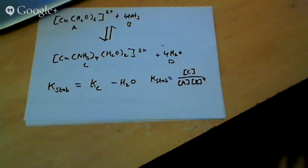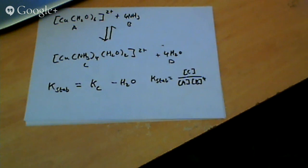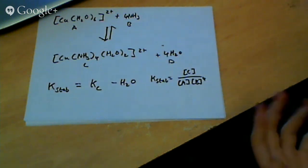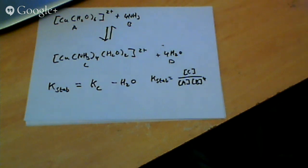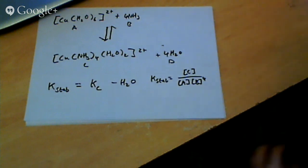Cyclic photophosphorylation occurs sometimes just because — well, it may be because there's a problem with photosystem 2 or you can't use photosystem 2. Perhaps there is no water available, because in non-cyclic you need water and in cyclic you don't. It also is something that can cause guard cells to open and close.